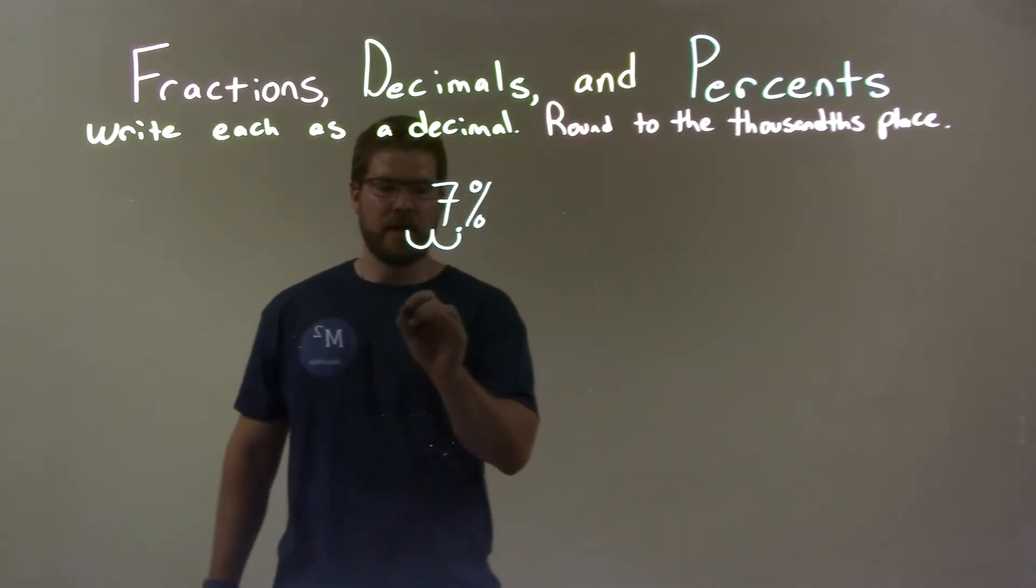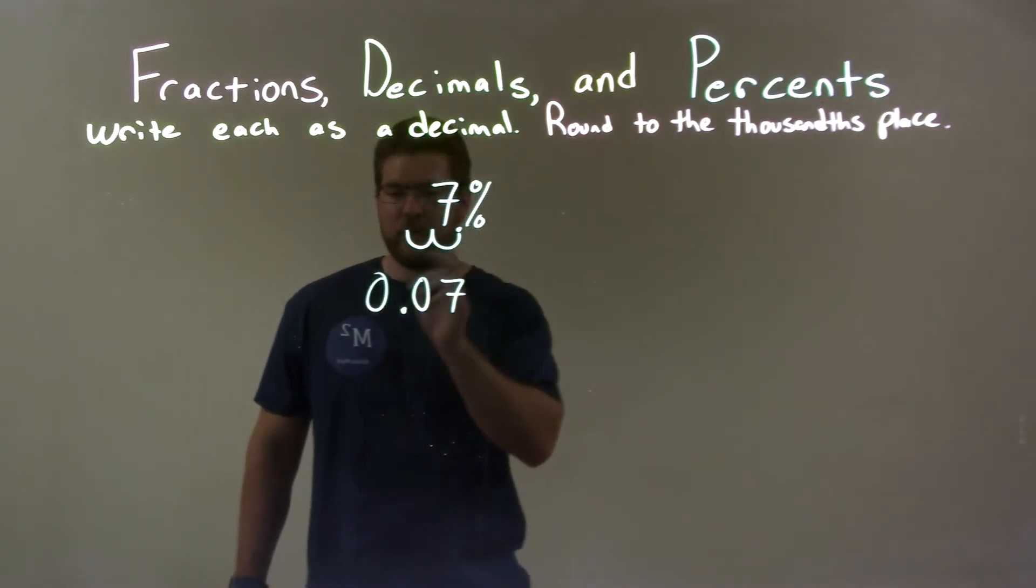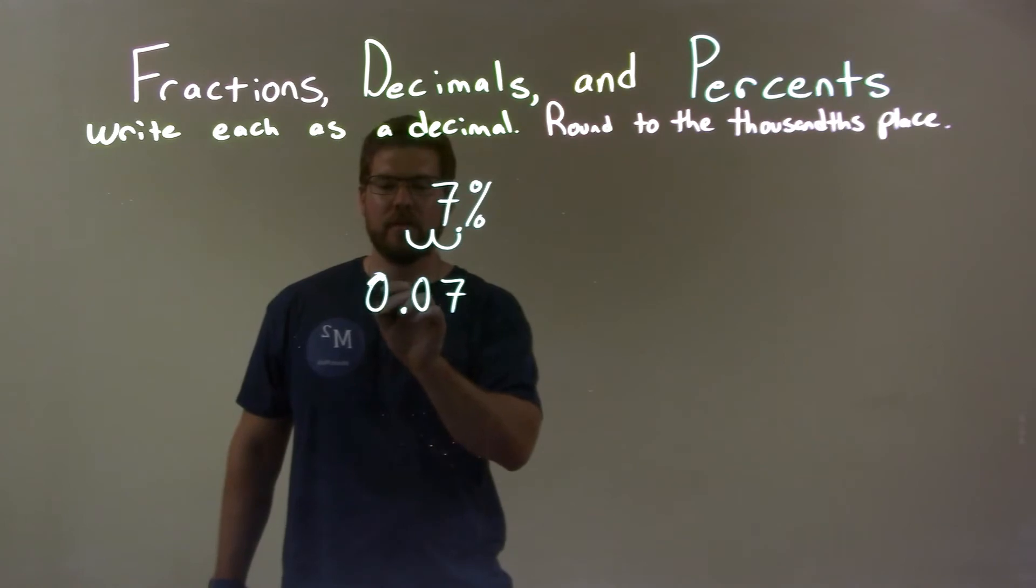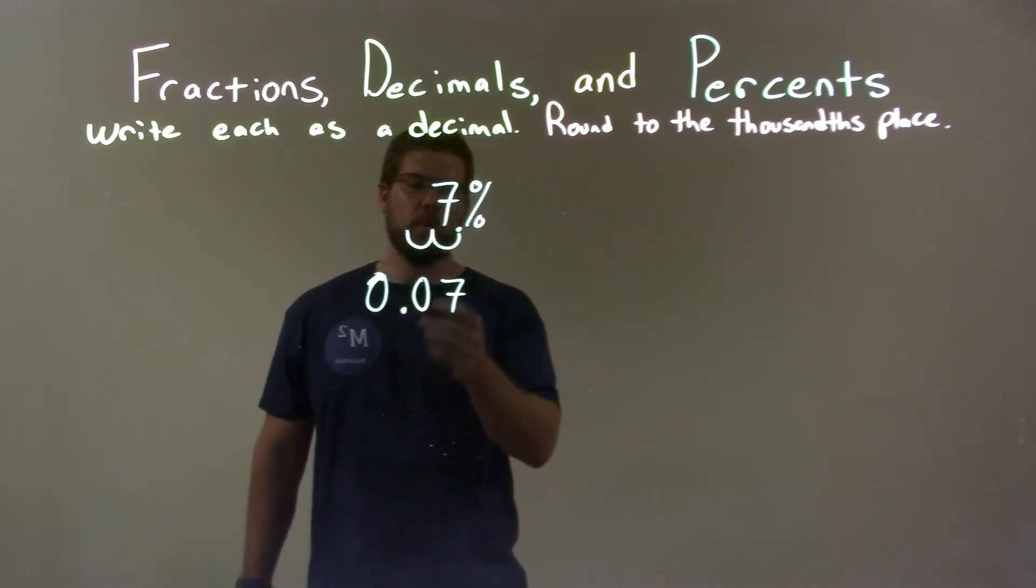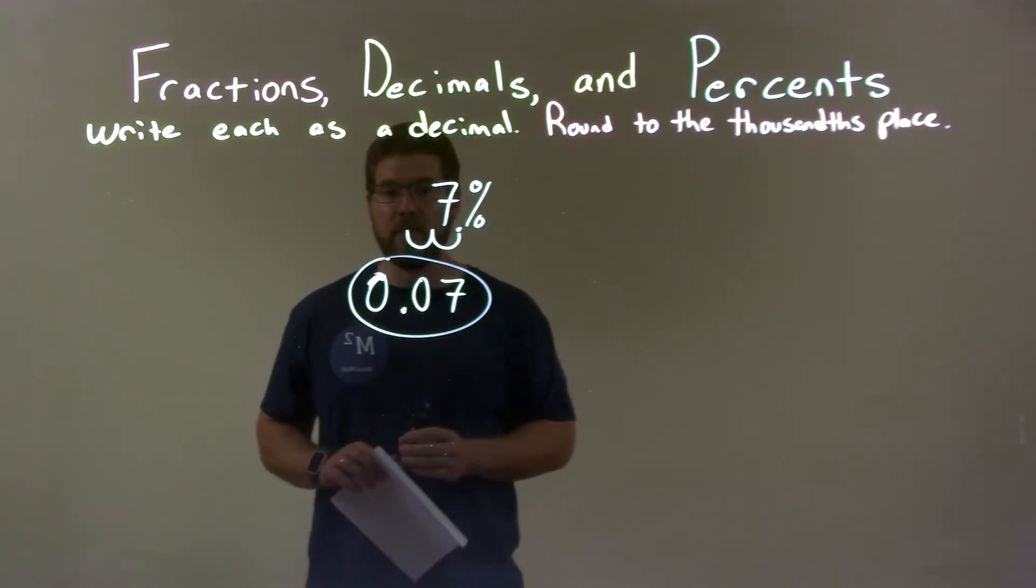Two spots to the left gives us that decimal here. We have a zero and then a seven. Put a zero in front of the decimal place for good measure. That's a zero, not like a weird one, a backward six. And so we have zero point zero seven. That's it. That's our decimal answer. Zero point zero seven.